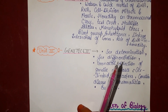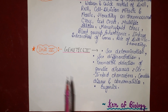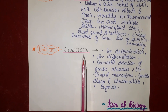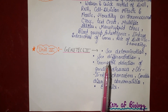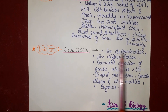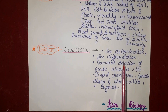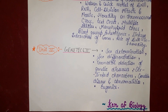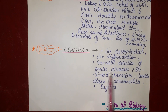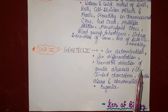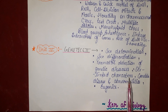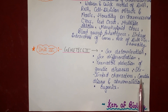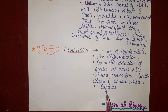Unit 4 is Genetics Second, in which we study sex determination, sex differentiation, prenatal detection of genetic disease, sex-linked characters, genetic diseases and abnormalities, and eugenics.